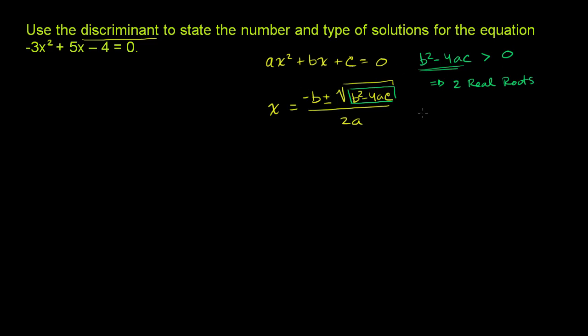If b² - 4ac is equal to 0, then this whole thing is just going to be equal to 0. It's the plus or minus square root of 0, which is just 0. So it's plus or minus 0. Well, when you add or subtract 0, that doesn't change the solution. So the only solution is going to be -b / 2a. So you're only going to have one real solution.